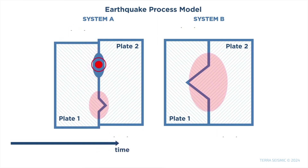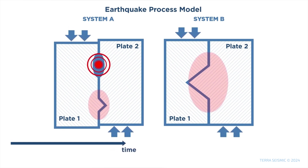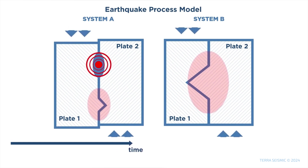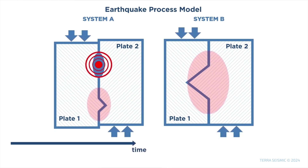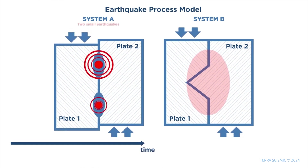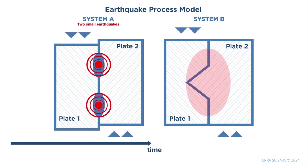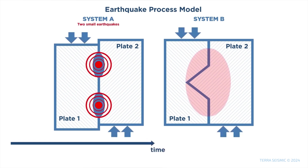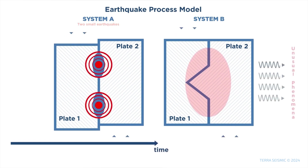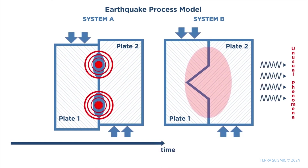In System A, stress gradually increases until it exceeds the forces of friction, resulting in two small earthquakes. However, a major earthquake in System B will require much more preparation time. Due to a bigger adhesion zone and the larger friction forces acting here, System B will behave differently than System A. System B is locked, and the Earth's crust above its larger adhesion zone will be noticeably stressed.